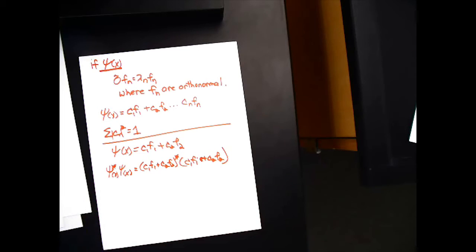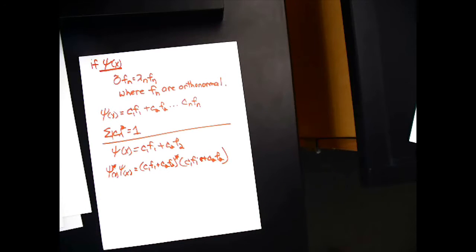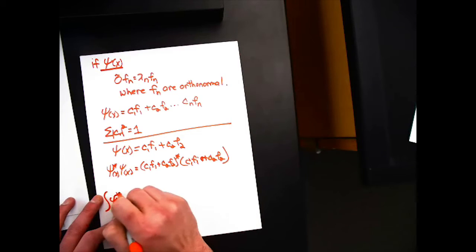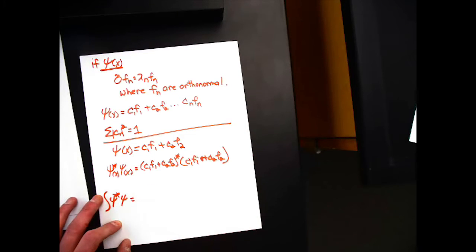And if the wave function is to be normalized, then the integral over all space of psi star psi has to be equal to one. So let's take the integral over all space of psi star psi. And we're just going to FOIL this out.